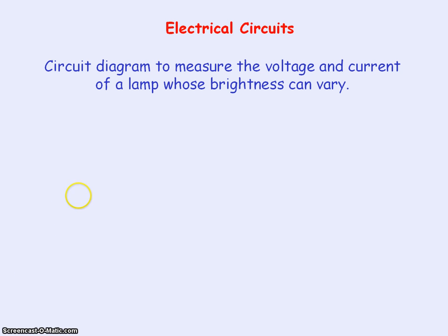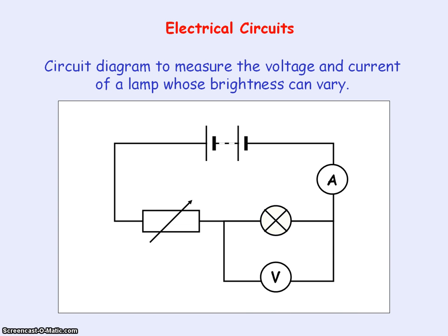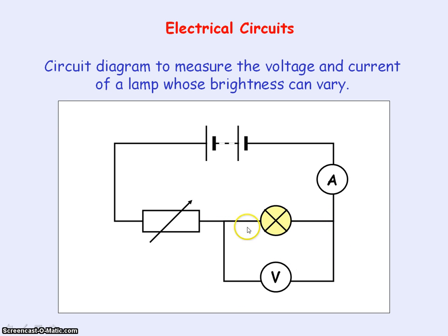Finally, we're going to look at a circuit diagram where you can measure the voltage across the lamp and the current through it. We have an ammeter which needs to be connected in series with the lamp to measure the current through it, and the voltmeter needs to be connected in parallel with the lamp so it can measure the voltage or the potential difference across the lamp.